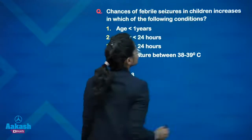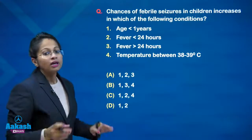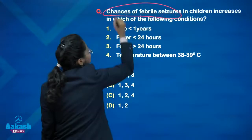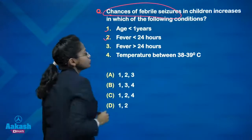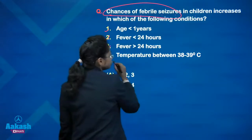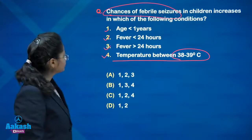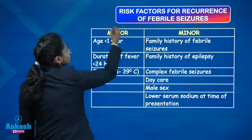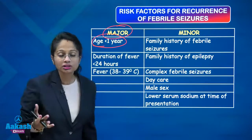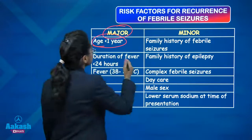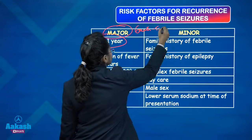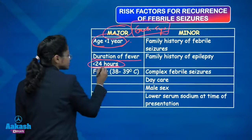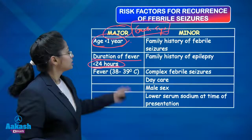Next question: chances of febrile seizure recurrence in children increases in which of the following conditions? This is a direct table from Nelson. The options are: age less than 1 year, fever of less than 24 hours duration, fever of more than 24 hours, and a temperature between 38 to 39 degrees Celsius. The major risk factors for recurrence of febrile seizures from Nelson: age less than 1 year — when febrile seizure appears in a child below 1 year — and duration of fever less than 24 hours when it appears within 24 hours of onset of fever.